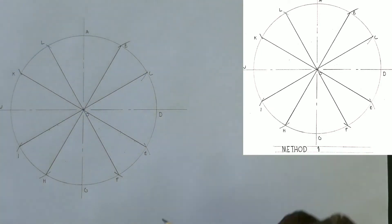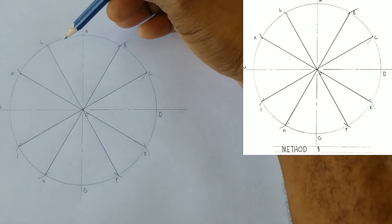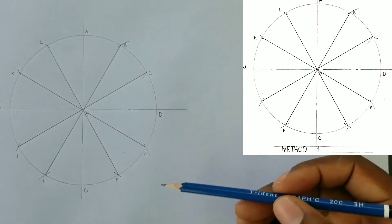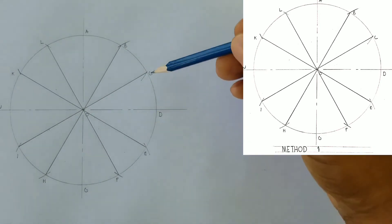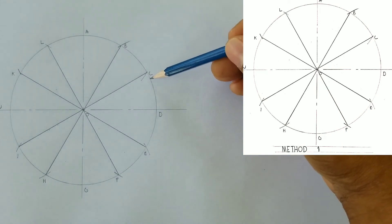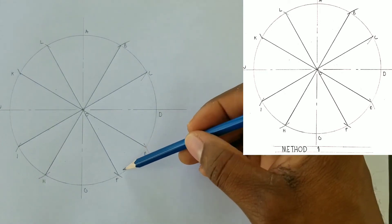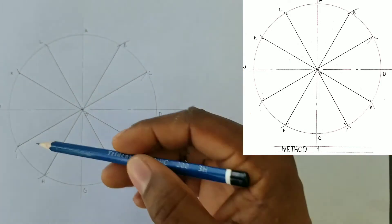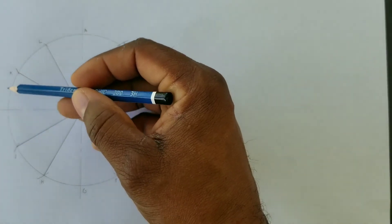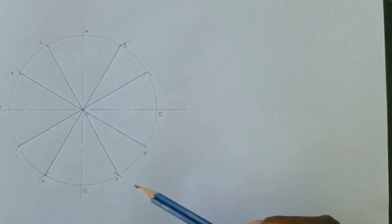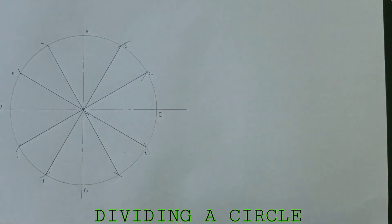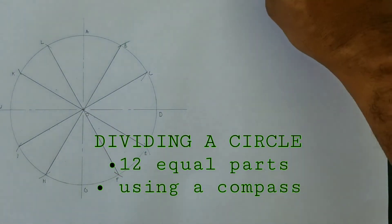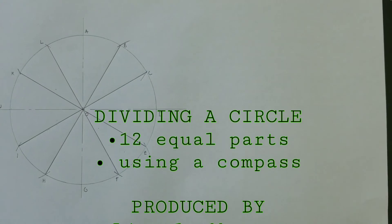Now we have just divided the circumference of our circle into 12 equal parts. I will now border my paper and complete my title block.